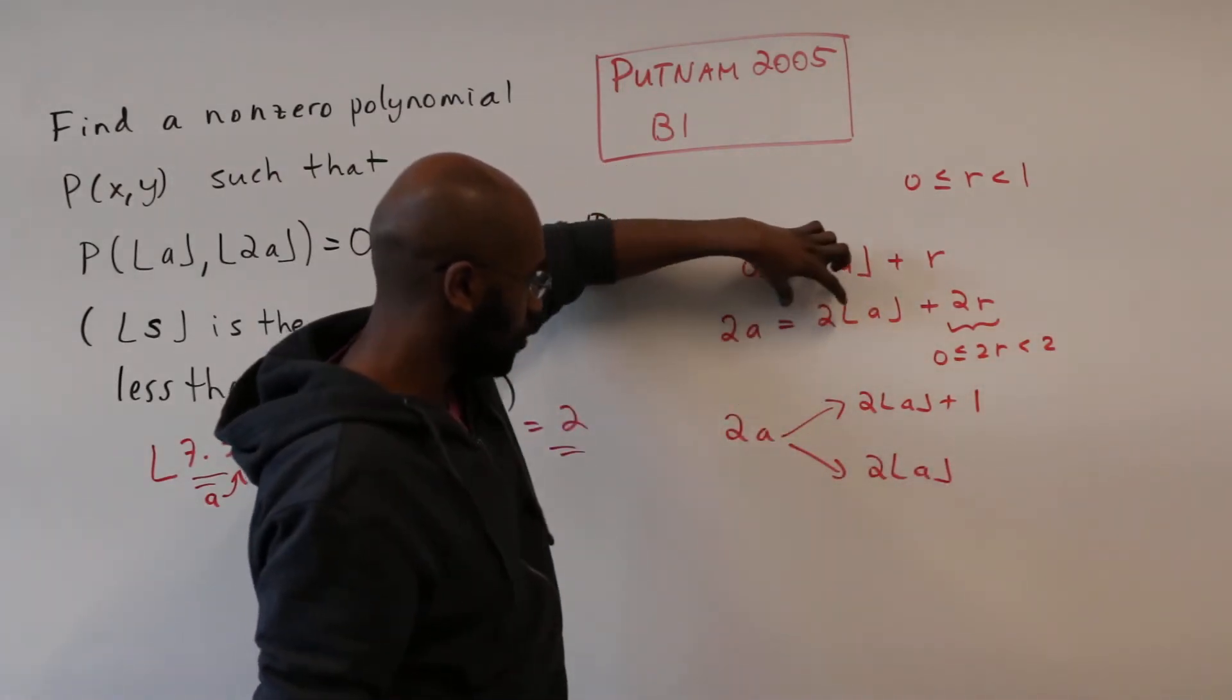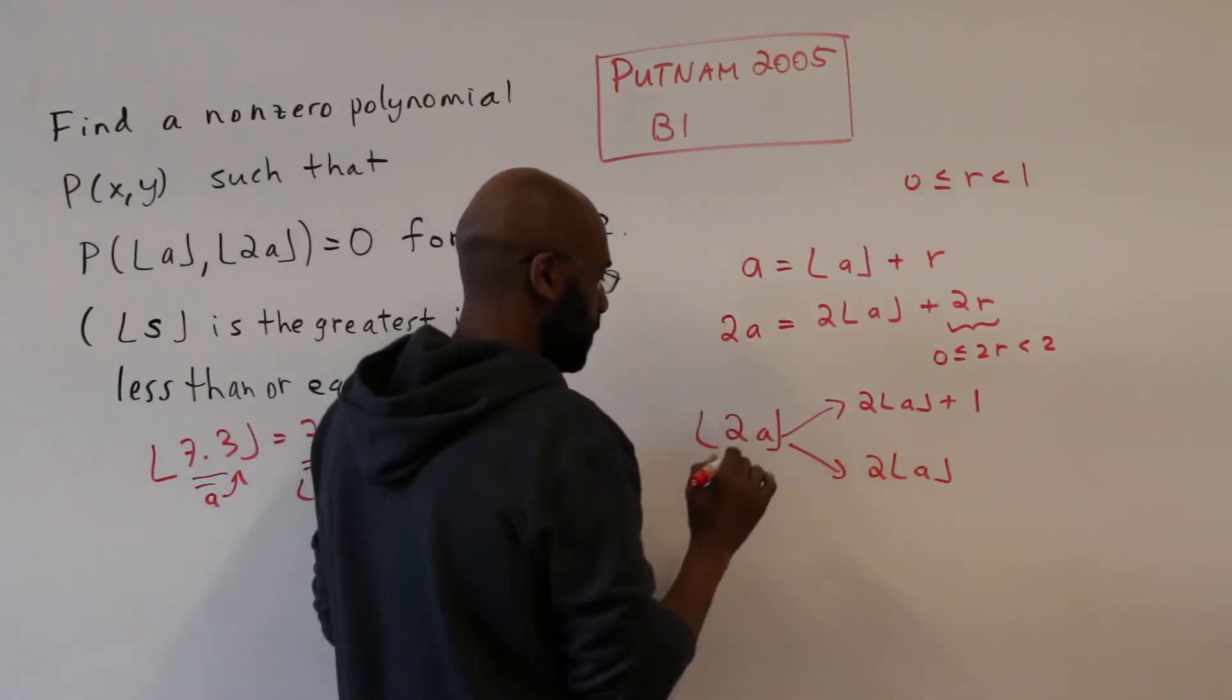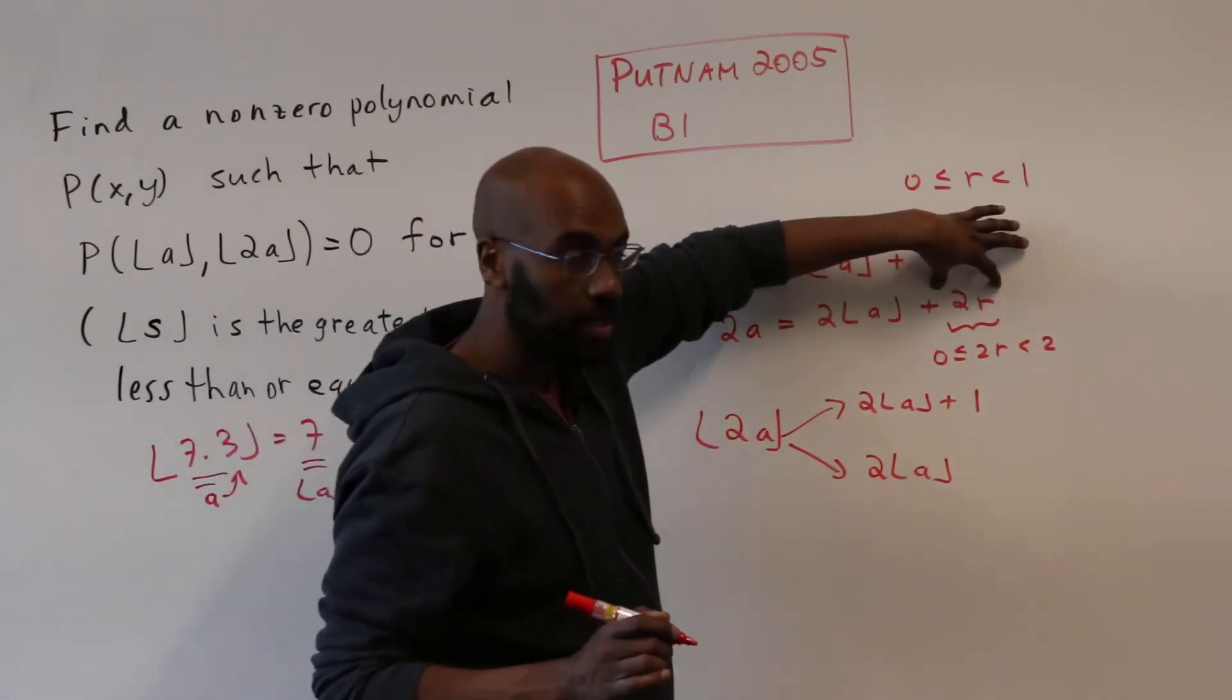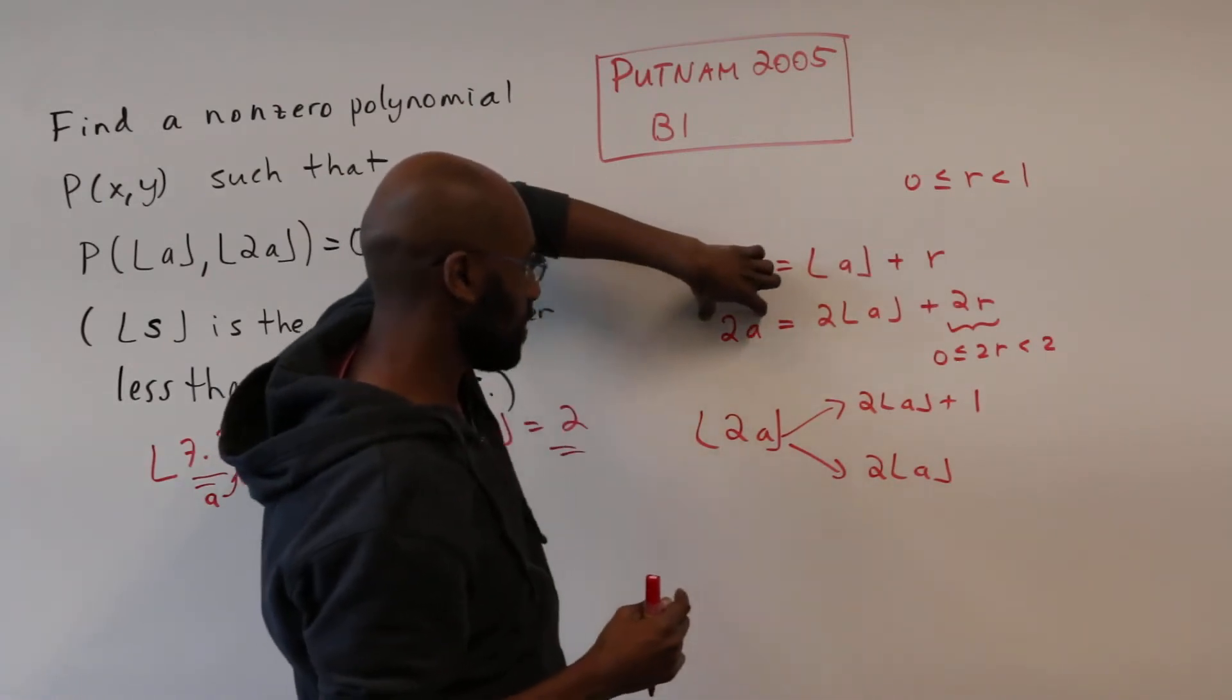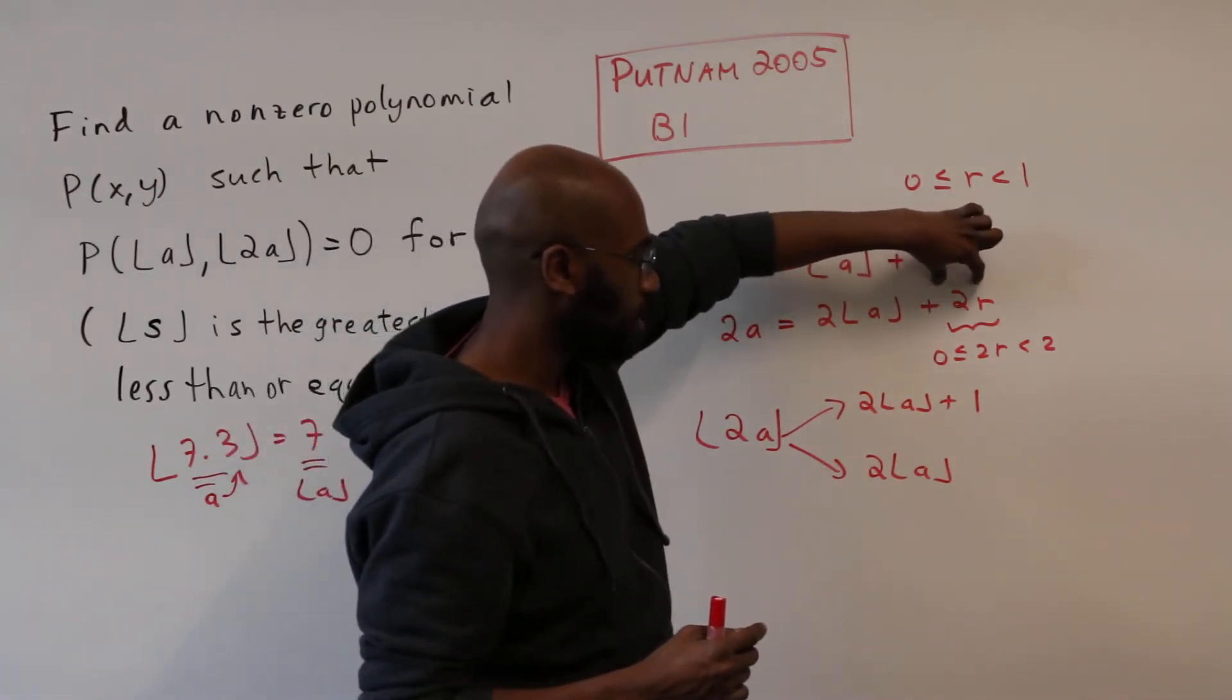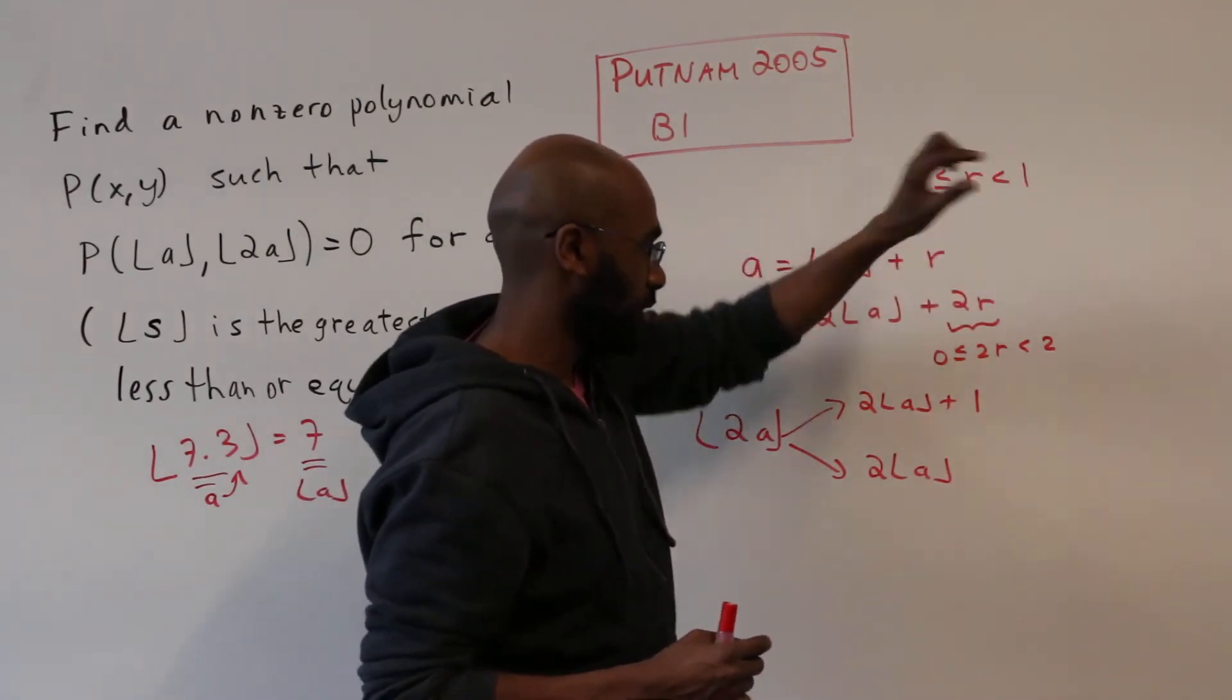Because it is this integer value, this is the floor of 2a, because 2a is this integer value plus something that is between 0 and strictly less than 2. So if I look at the greatest integer less than or equal to it, we're either going to take this integer and add 1 and a little bit or 0 and just a little bit.